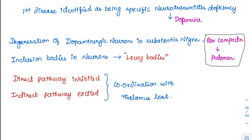There are specific inclusion bodies in Parkinson's disease called Lewy bodies, which you will also study in pathology. Inside the basal ganglia there are two pathways: the direct pathway and the indirect pathway. Normally, the direct pathway is activated — enhancing movement — while the indirect pathway is inhibited. In Parkinson's, the reverse happens: the indirect pathway is activated and the direct pathway is inhibited, so coordination with the thalamus is completely lost, resulting in movement disorders.